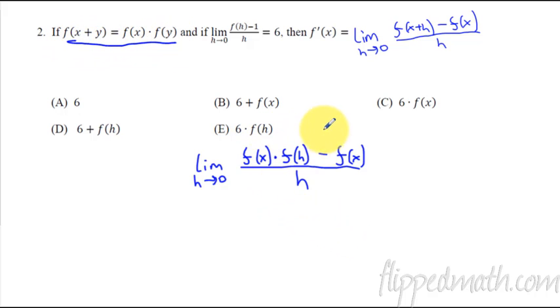From here you can notice what do these two terms have in common? They have an f(x). You're going to factor out an f(x) and then we get what's left, f(h) minus one, and that's all over h. We still have the limit as h approaches zero.